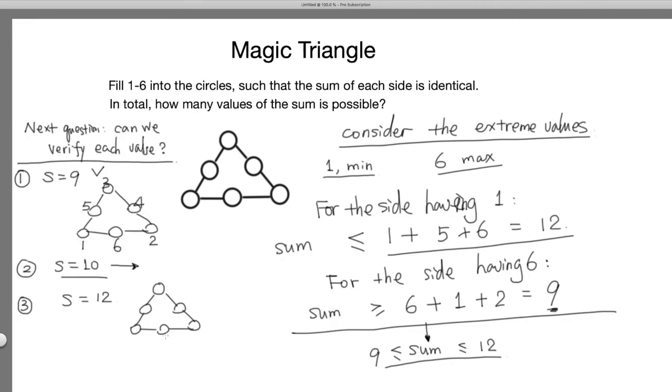Which means that 1 cannot be on the vertex because if it's a vertex, you have to have two ways to make it 12. So 1 without loss of generality is here, and 5 and 6. Without loss of generality, you can put 5 here and 6 here. And then for the 6 to get 12, it has to be 6 plus 2 plus 4. Can 2 be here? If it's 2, then this has to be 5. So this has to be 4, this is 2, and this is 3.